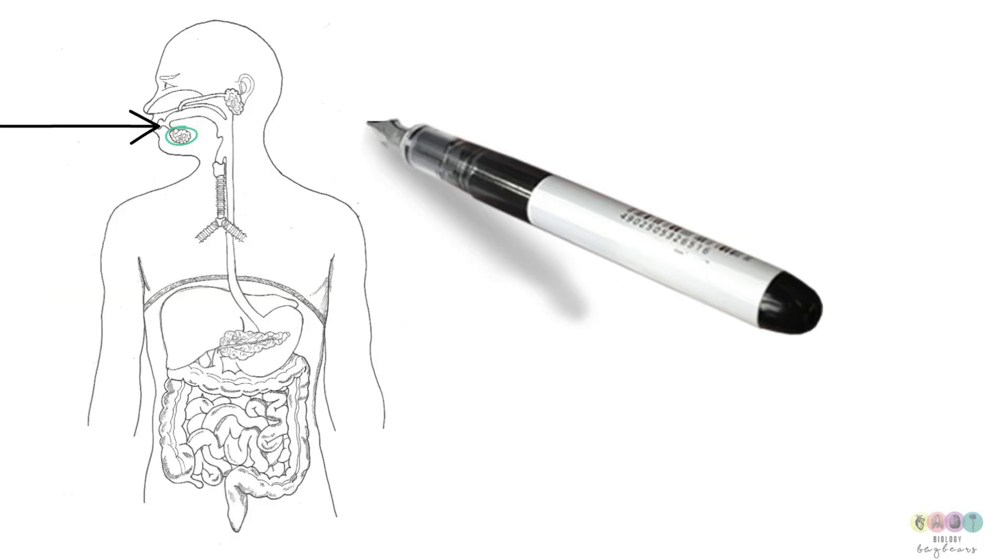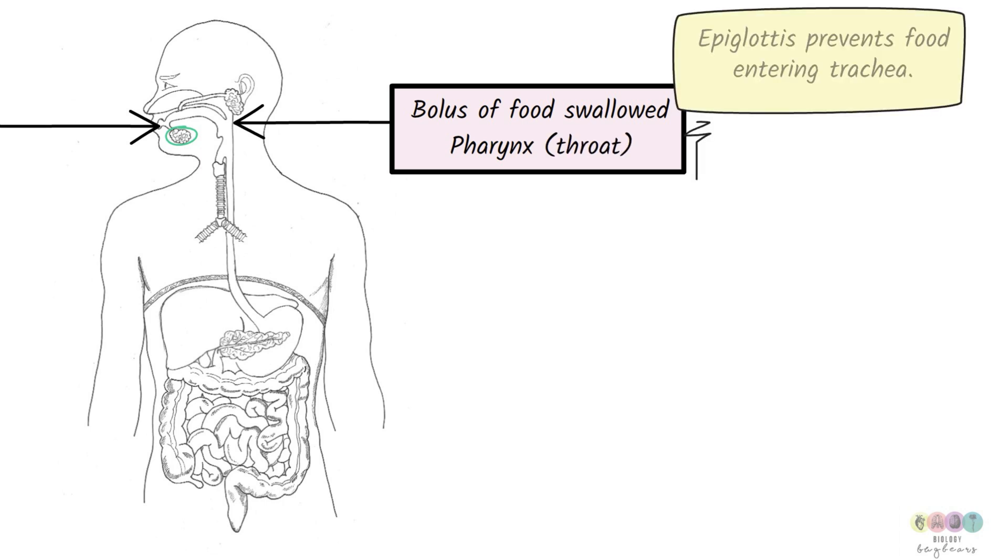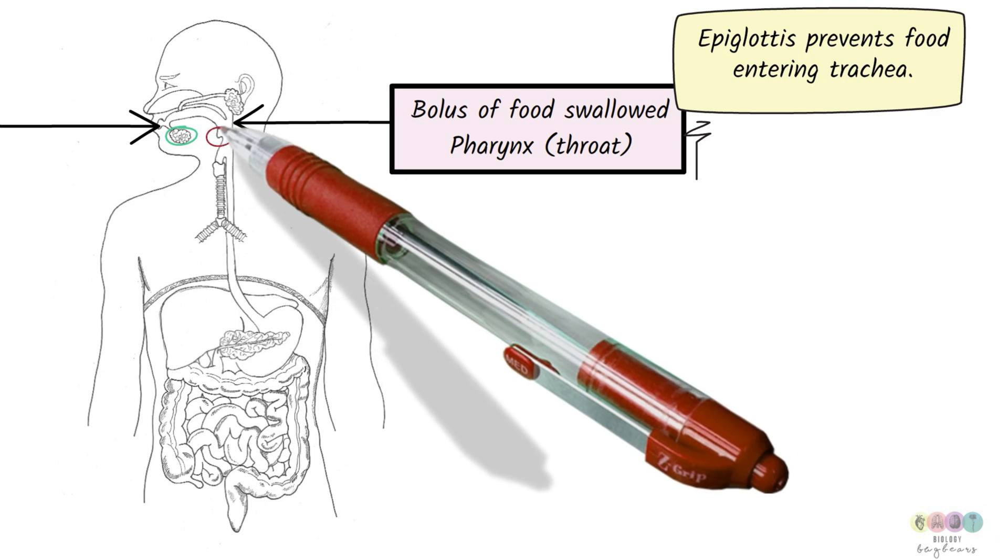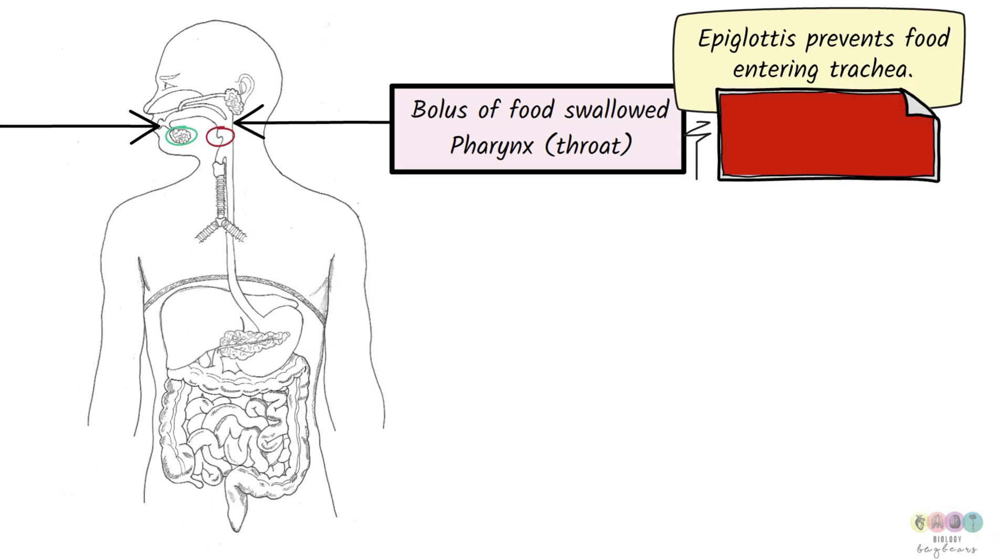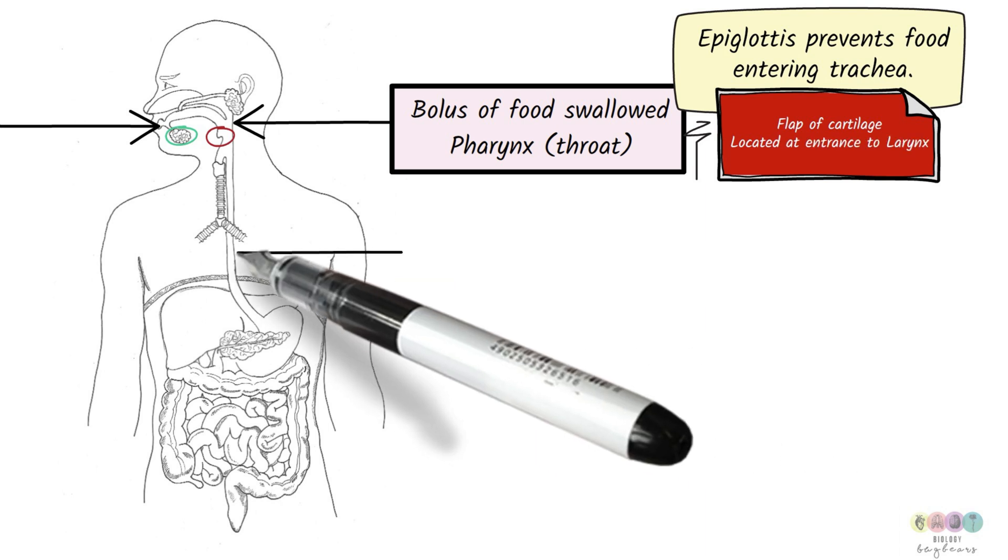The food gets swallowed and passes into your pharynx, which is your throat. And it's like a ball or a lump. So it's known as a bolus of food. So the bolus of food gets swallowed, passes into your pharynx or your throat, continues on its journey downwards. However, there is this little structure known as the epiglottis. This is a flap of cartilage that prevents the food from entering the windpipe, the trachea. And it's located at the entrance to the larynx, your voice box.